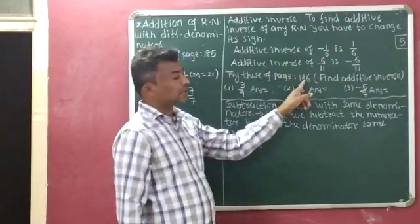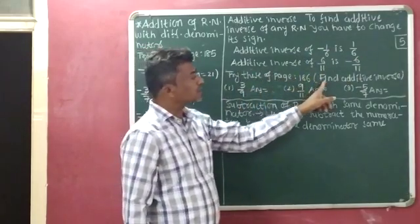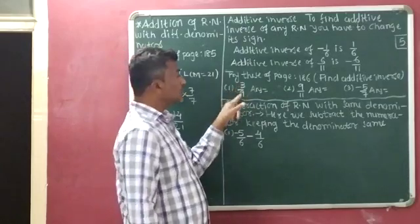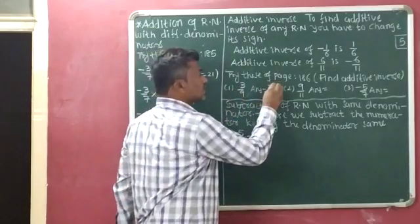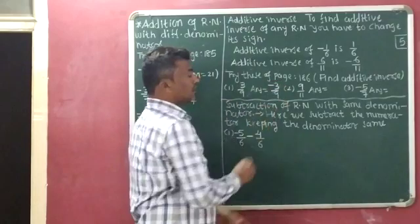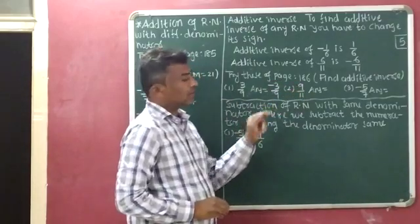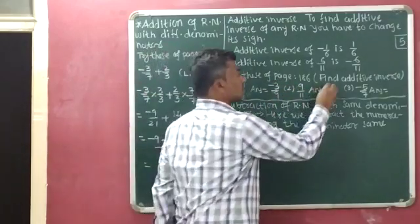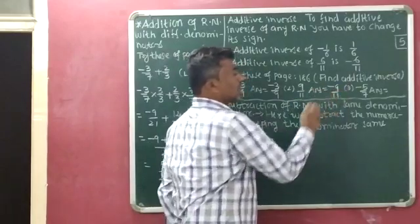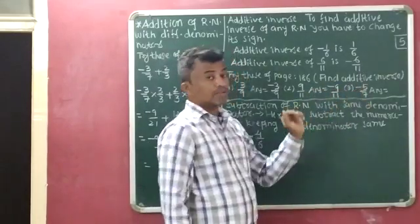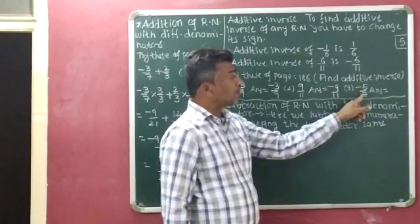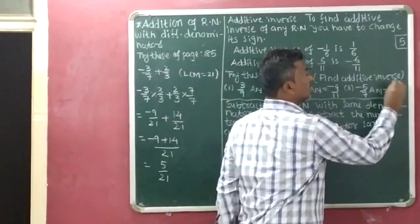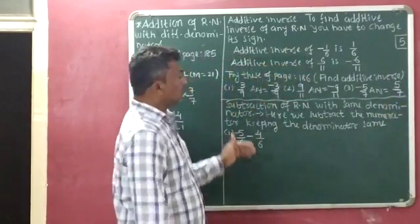Now try these from page 186: find the additive inverse. The additive inverse of 3 by 9 is minus 3 by 9. The additive inverse of 9 by 11 is minus 9 by 11. The additive inverse of minus 5 by 7 is positive 5 by 7.